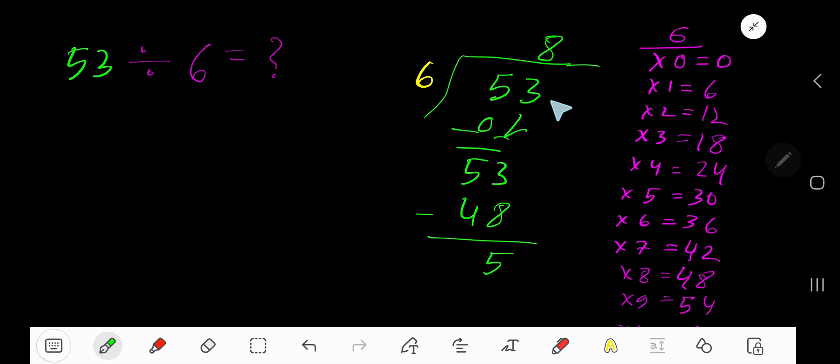If you want to write your answer in decimal form, then take a decimal. Add number of zeros. Bring down the first zero. Before this zero, there is a decimal. Decimal must come to the quotient directly.